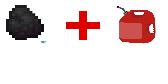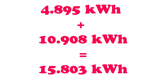So we add the coal and the gasoline together — 4.895 kilowatt hours plus 10.908 kilowatt hours — which gives us 15.803 kilowatt hours so far. That's not a bad energy rate.